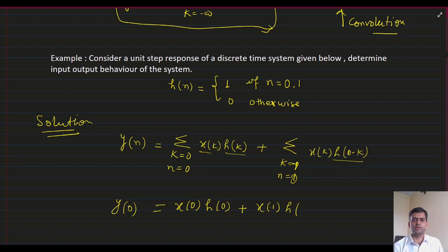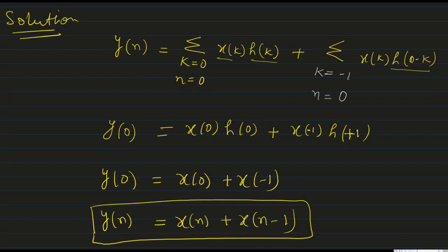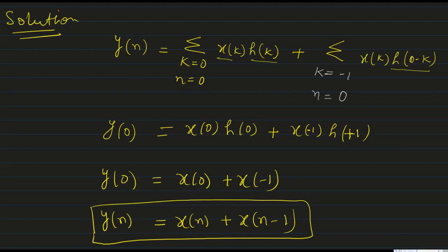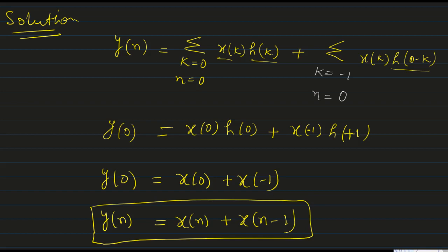So, it will become X of minus 1 and H of 1. At Y(N), since H(0) and H(1) are both 1, this gives us Y(N) = X(N) plus X(N minus 1). So this is the expression for the input-output relationship between output and input. Thank you so much.